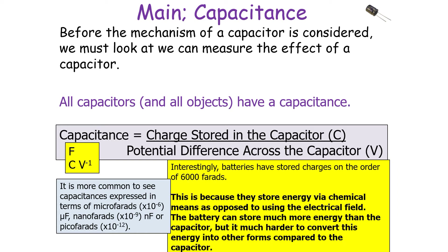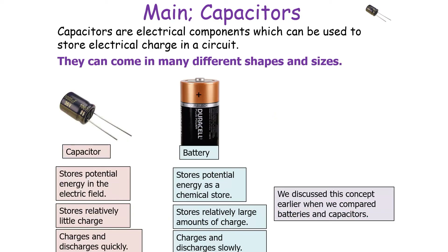Because batteries store energy via chemical means rather than the electrical field, they can store much more energy than a capacitor, but they find it much harder to convert this energy into other forms compared to the capacitor. As discussed earlier, there is a clear comparison to be made between a capacitor and a battery.